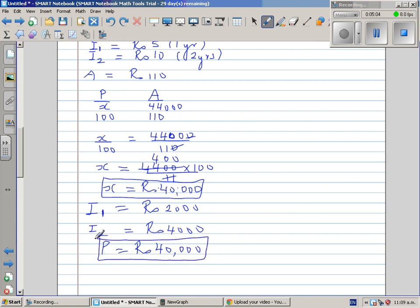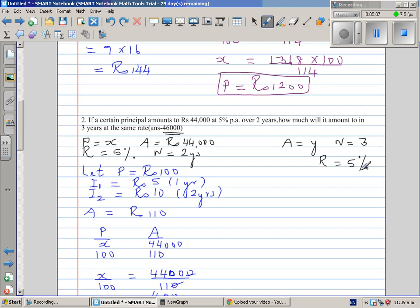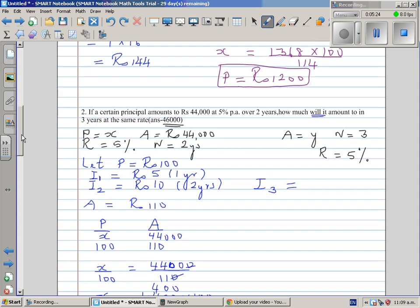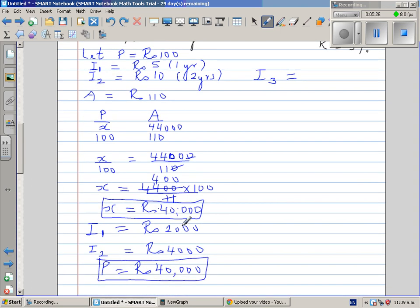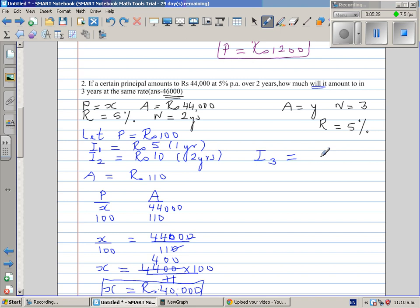So we have to use this information to figure out now, what would be the amount? How much would it, it means 40,000, amount to after three years? So interest for three years, logically you can understand interest for one year is 2,000. So for three years, it would be 6,000. So your answer is, your amount is 46,000. It's 46,000 rupees. And you've confirmed the answer.